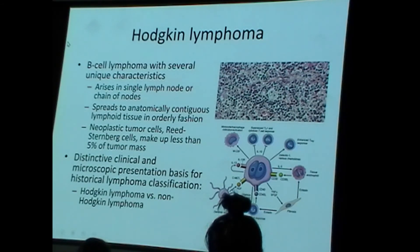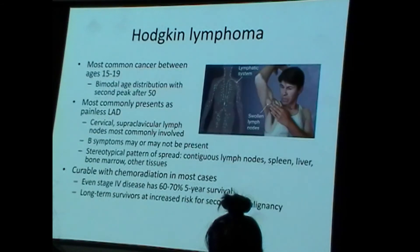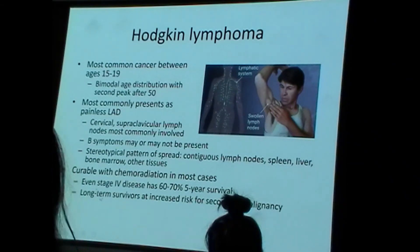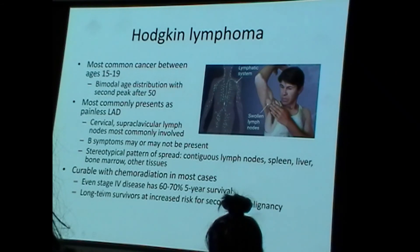Non-Hodgkin lymphoma is basically every other lymphoma. If you hear that someone dies of non-Hodgkin lymphoma, that could mean any of several hundred lymphomas. Hodgkin lymphoma is the most common cancer in teenagers. They usually present with painless lymphadenopathy that may or may not have B symptoms. Hodgkin lymphoma is frequently curable with chemo-radiation — even stage 4 disease can have good five-year survival.